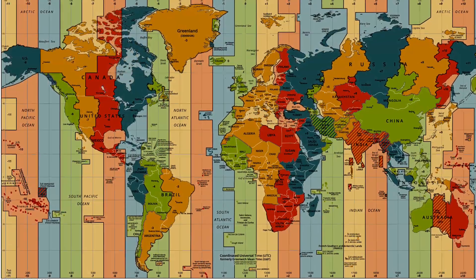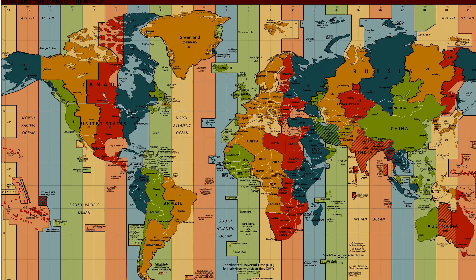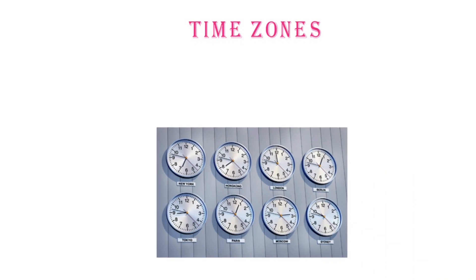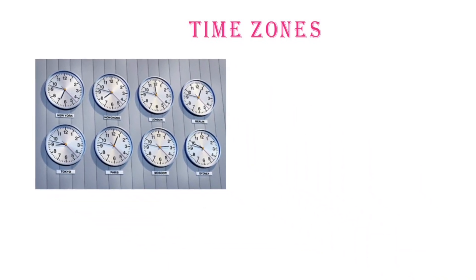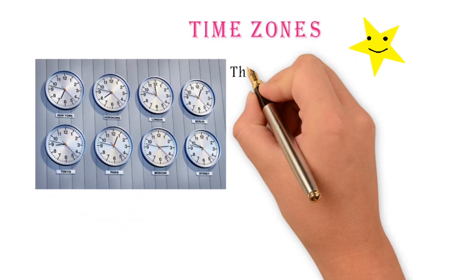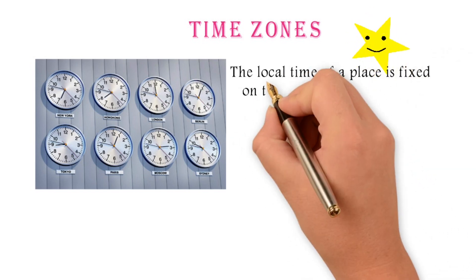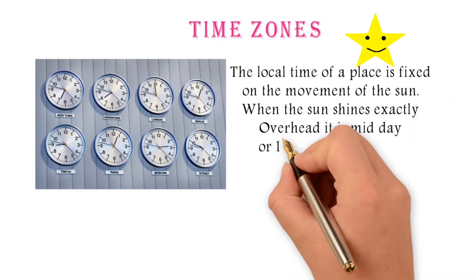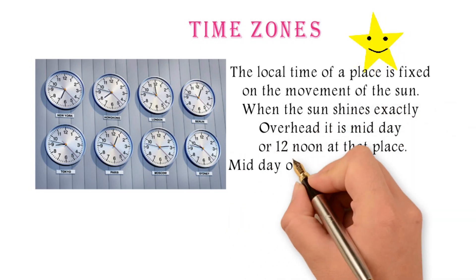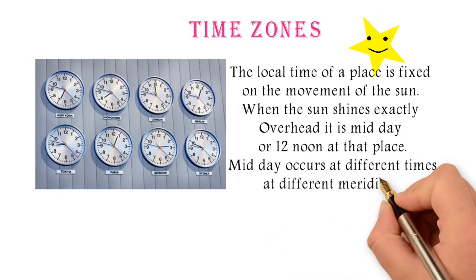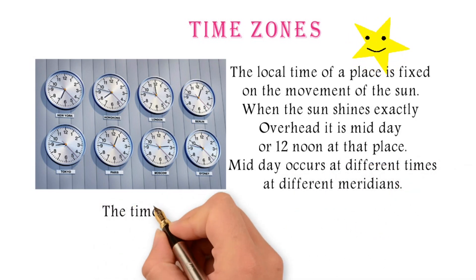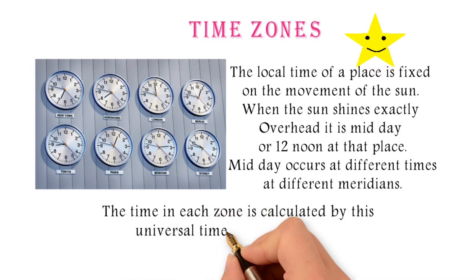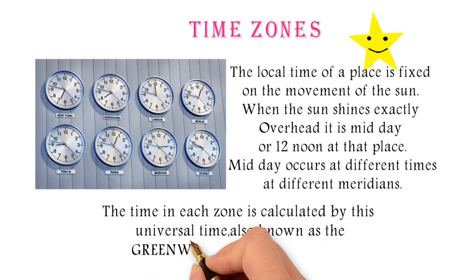This is the World Time Zone Map. When the sun shines exactly overhead, it is midday or 12 noon at that place. The time in each zone is calculated using Universal Time, also known as the Greenwich Mean Time, or GMT.